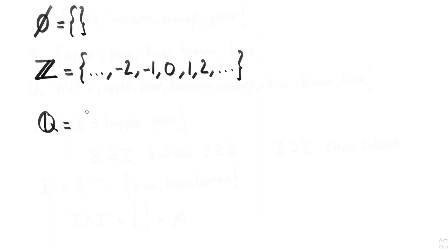So we represent the elements of Q in a symbolic way. We say that the set of rational numbers contains numbers of the form P over Q, such that, indicated by the colon, such that P is a member of the integers, and Q is a member of the integers without zero. This is to avoid dividing by zero.